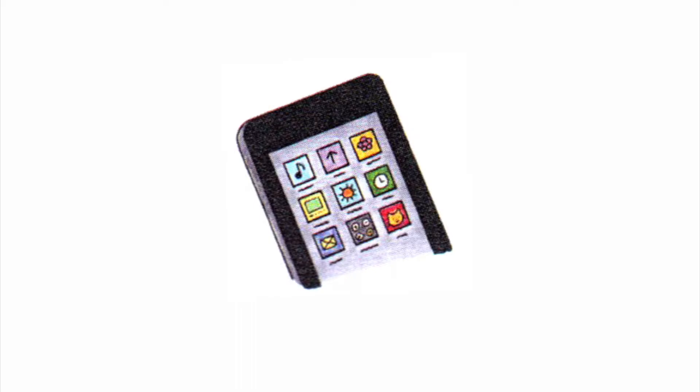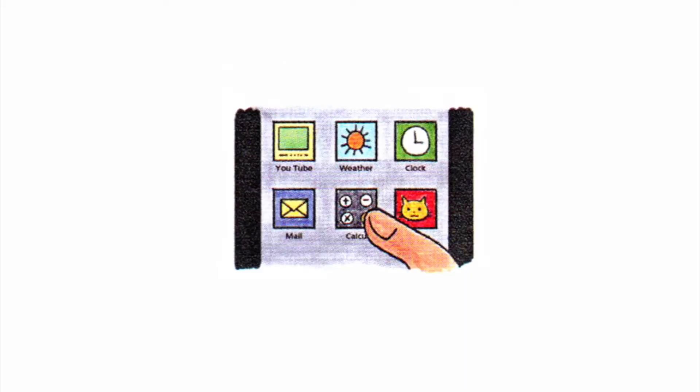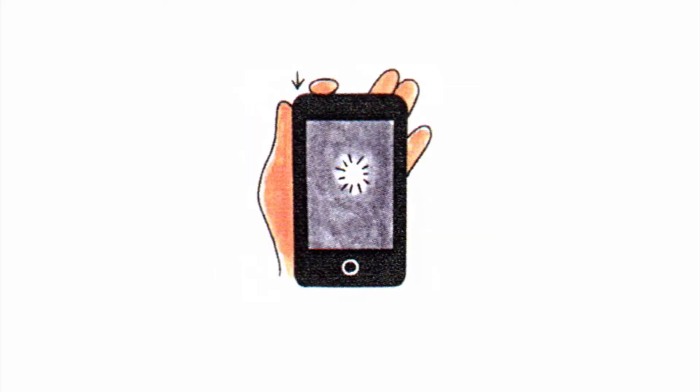There were icons for many apps on the main screen. I touched the icon for the calculator app so I could add some numbers. To turn the player off, I held the On-Off button down for 5 seconds.